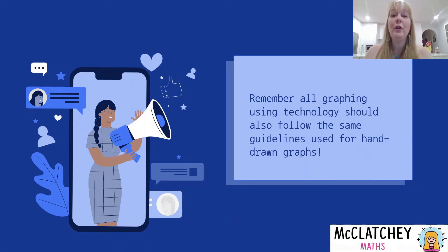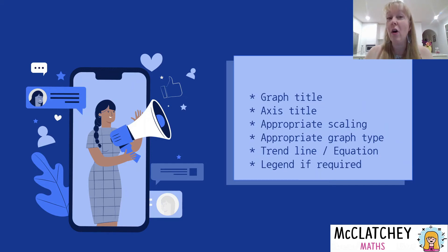Another important thing to remember when you're presenting graphs generated by technology is that we follow all of the same rules that we would follow for hand-drawn graphs. We need to make sure that we have things like a title on our graph, that both of our axes have titles, that our scaling is appropriate. We need to make sure we're using the right graph for the assignment, and if we're doing something like least squared regression we're going to show our trend line and also the equation on the graph, and if there's a legend required then we also make sure we insert all of those appropriate features.